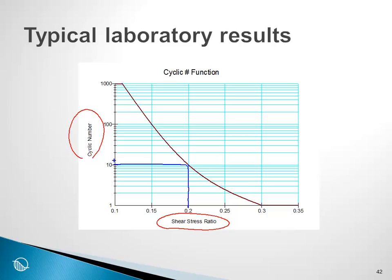If the stress ratio was 0.25, it would take merely just a couple of cycles to cause liquefaction. However, if the shear stress ratio was 0.15, it would take at least 100 cycles to cause liquefaction. So this is a log scale.